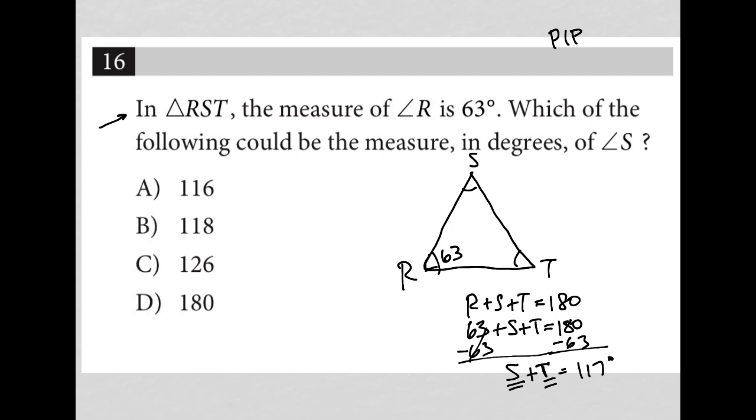So is it possible that the degree measurement of angle S is 116 degrees? Sure, right? Because that would make S equal 116, and that would make T equal to 1.